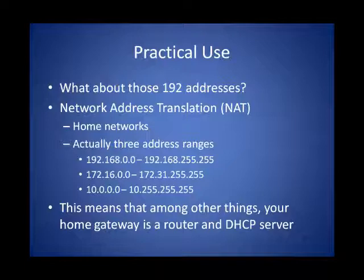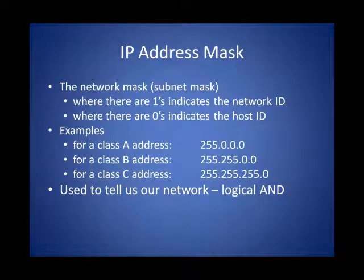That also means that your wireless home gateway device is actually not just giving you an IP address via DHCP, but is also a router, and there are several other functions it might serve. This slide is a repeat from part one, just here to remind us about the network mask. The network mask is really important for the forwarding of packets, and each size of address — regardless of class — requires a network mask to help us figure out where packets have to go.